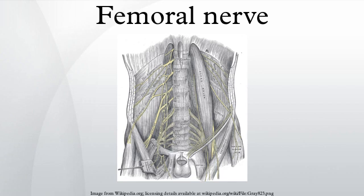Under the inguinal ligament, it is separated from the femoral artery by a portion of the psoas major. Within the abdomen, the femoral nerve gives off small branches to the iliacus muscle, and a branch which is distributed upon the upper part of the femoral artery. The latter branch may arise in the thigh.